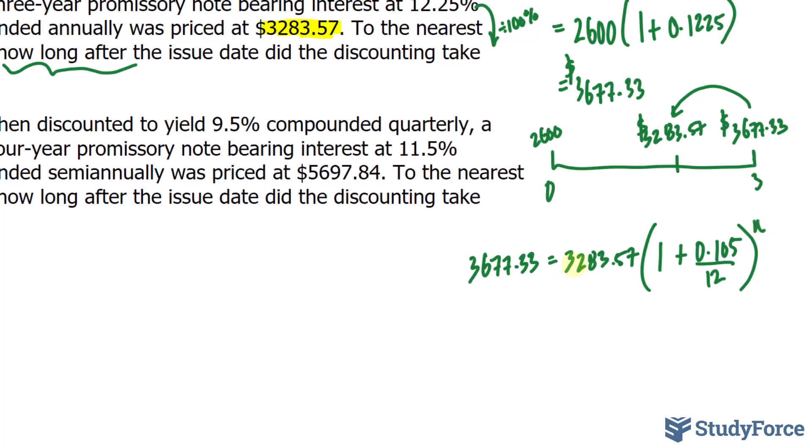Let's find out what n is. We divide both sides by that factor. So, $3,677.33 divided by $3,283.57. That's equal to 1 plus, well, whatever that is, raised to the power of n.